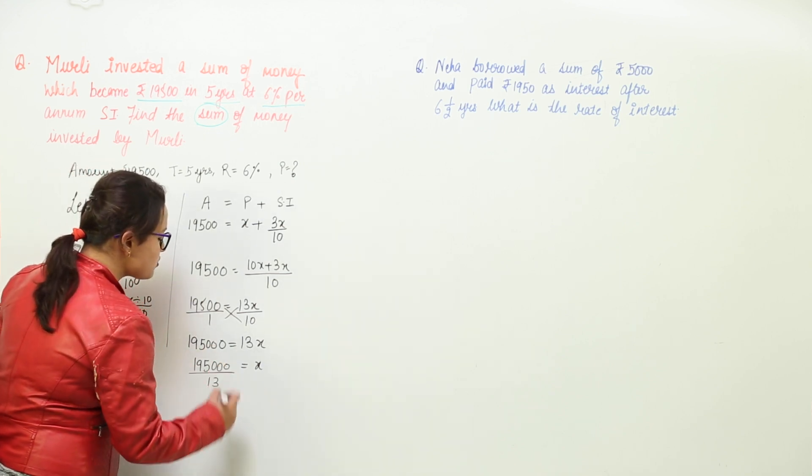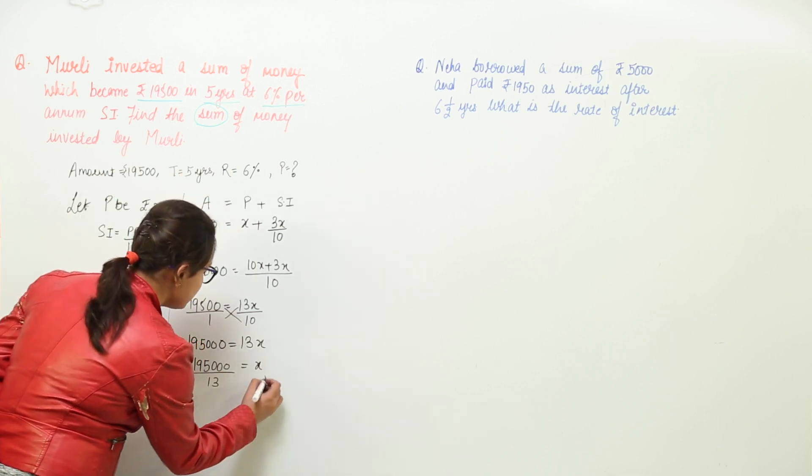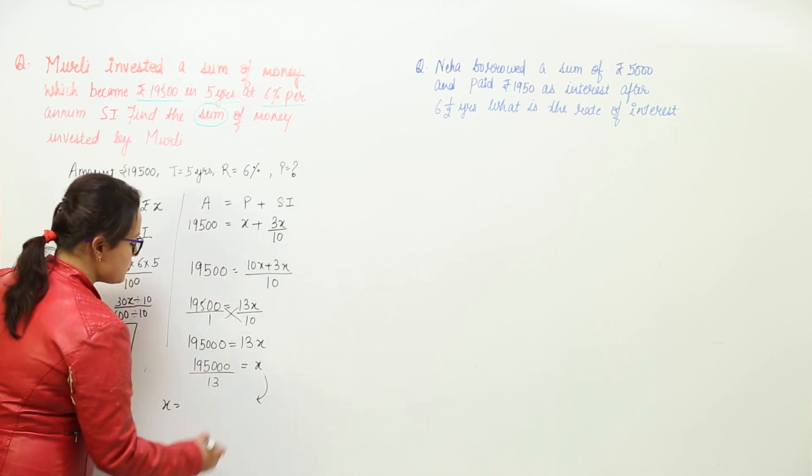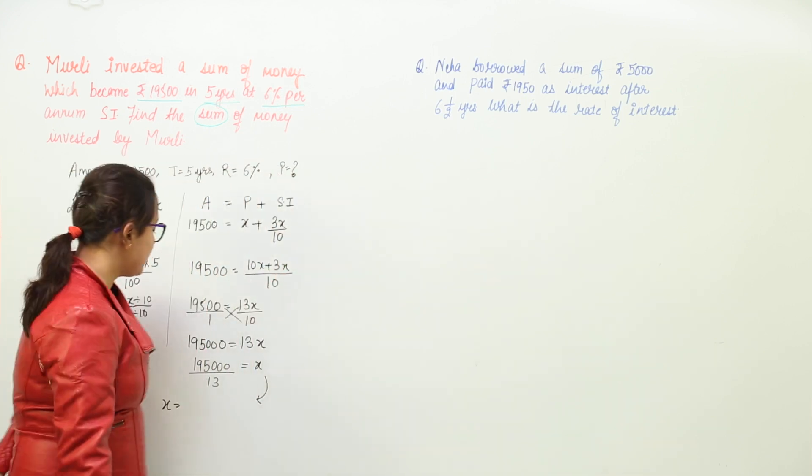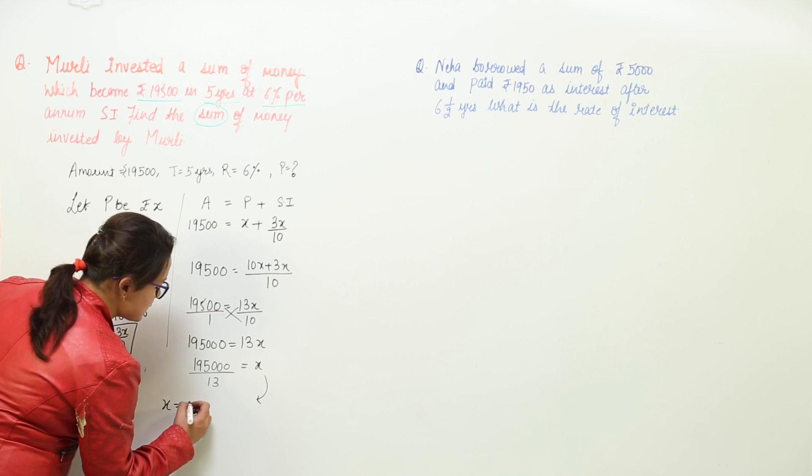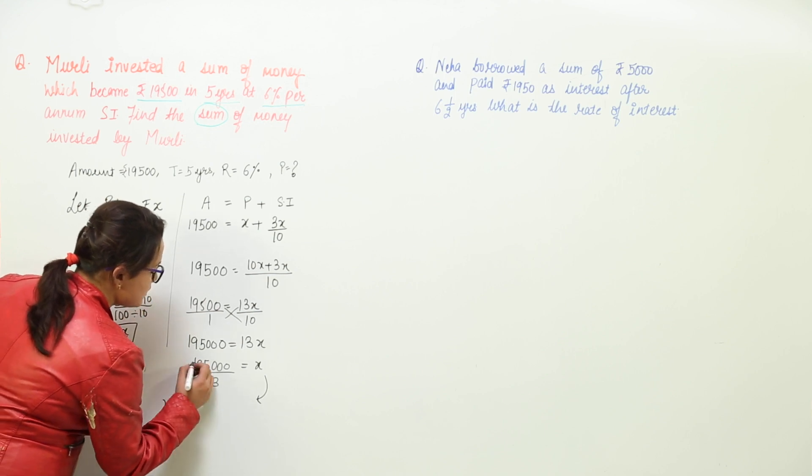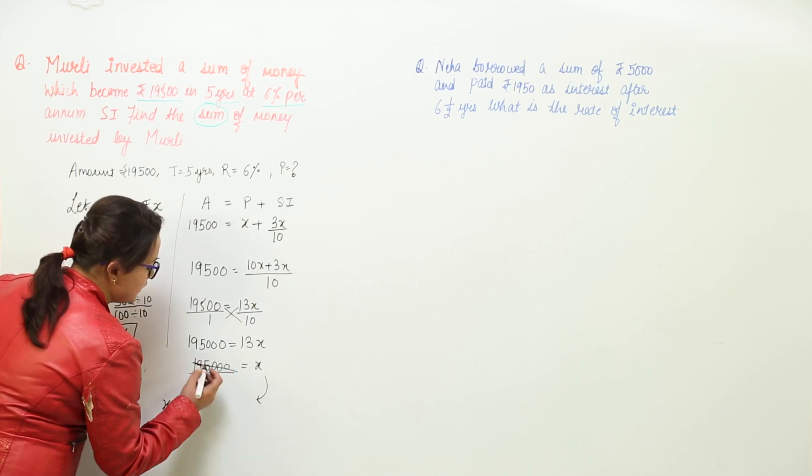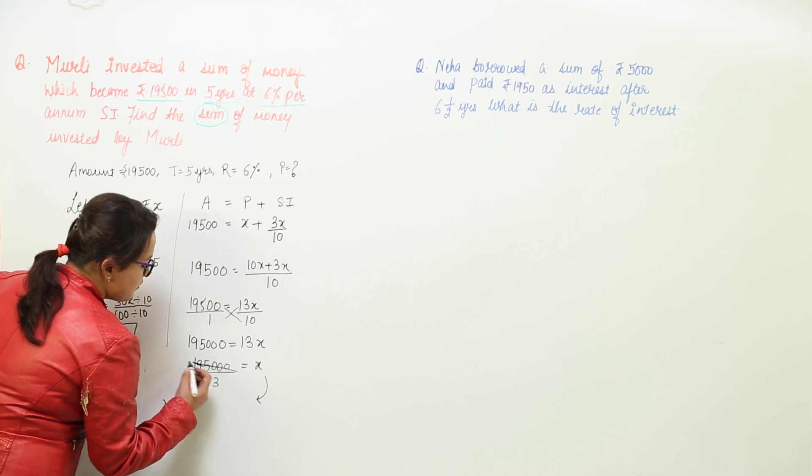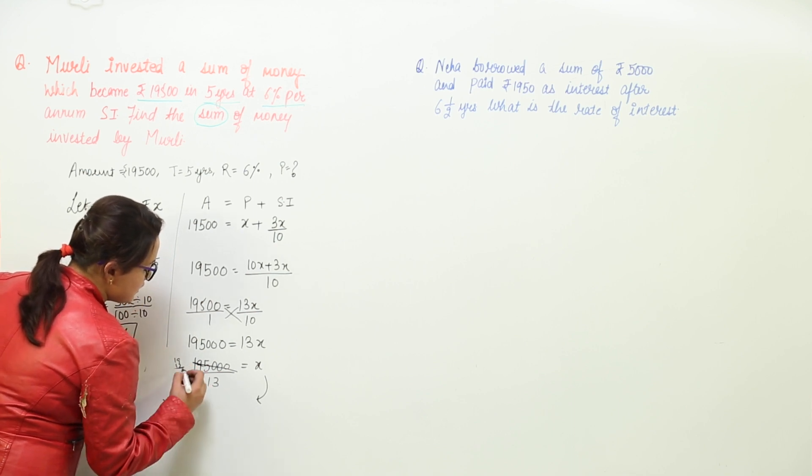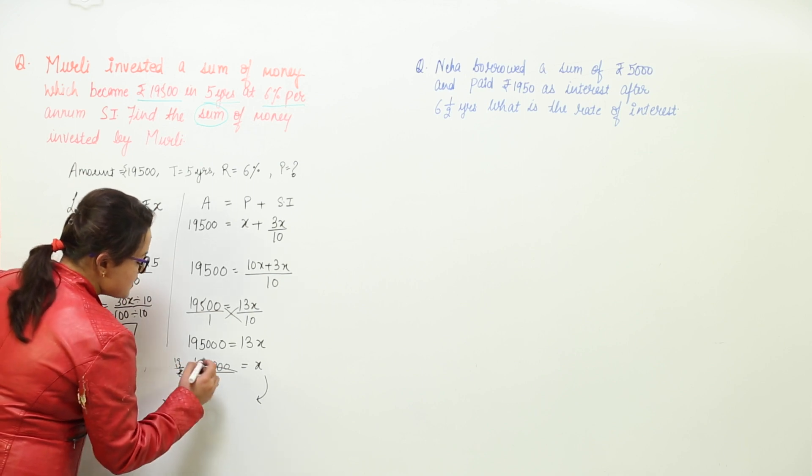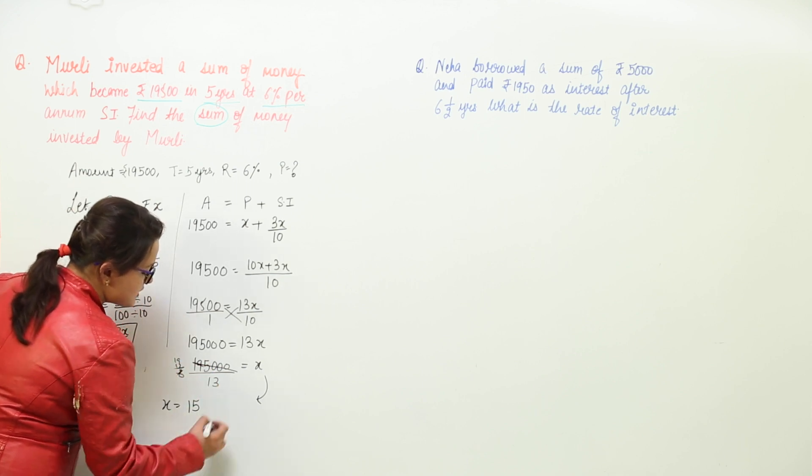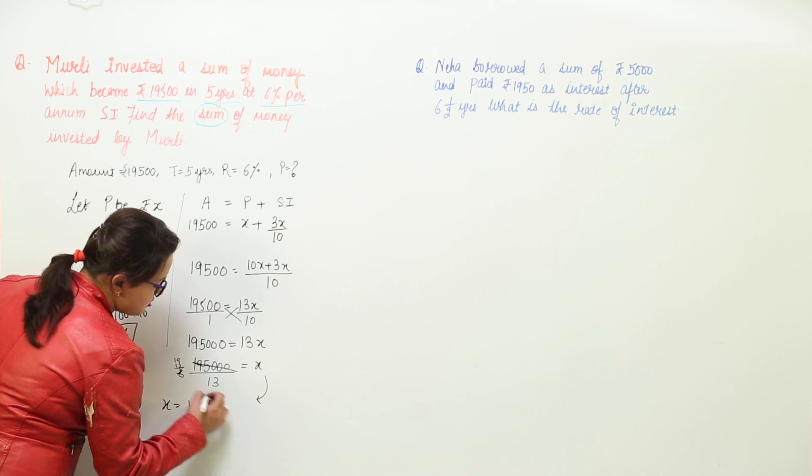We can continue solving it further. And this would give us the value of x to be equal to when we divide it that will give us the value for principal and that would be 13 ones as 13. We are left with let's just cut it over here only. 13 ones as 13. What is 19 minus 13? That gives you 7 again, 6 again. So you have 65 and we know 13 fives as 65 so you add 3 zeros as it is.